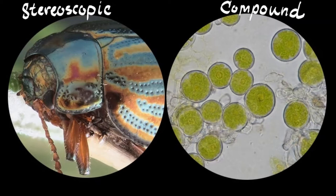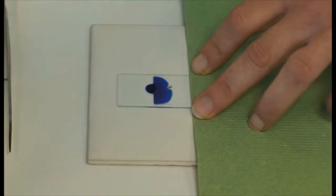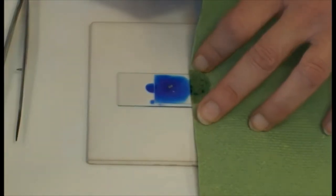We can use a compound microscope to see things much smaller such as the cellular structure of plants. These specimens must be prepared on a slide in order to view them.